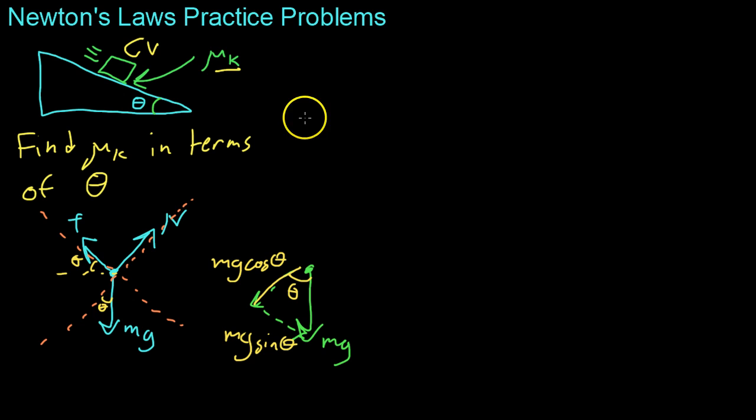Now, from here, all we have to do is sum the forces in the x direction and sum the forces in the y direction, like we did in the previous problems. And we know that they're both zero because the block isn't accelerating. It's moving at constant velocity.